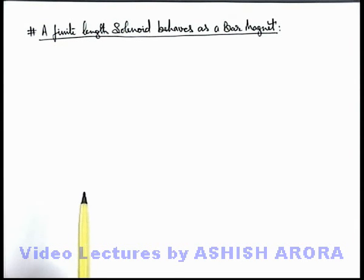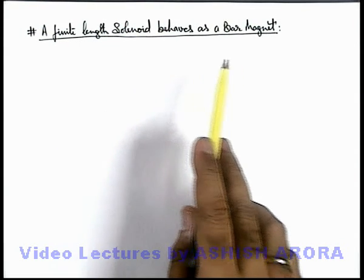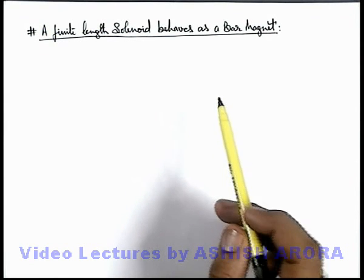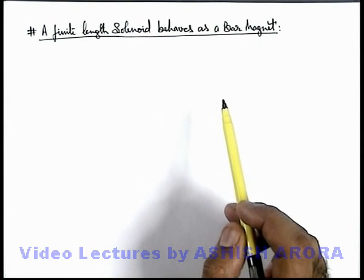Let us discuss a concept similar to the one we discussed in the previous section. A finite length solenoid behaves as a bar magnet. In the previous section we studied that a very small coil behaves like a short magnetic dipole.